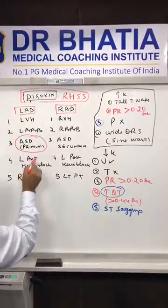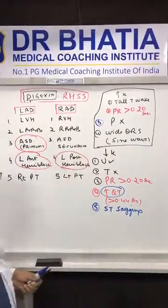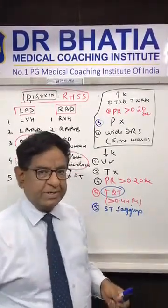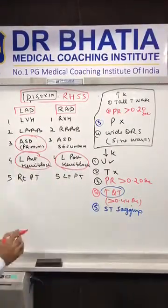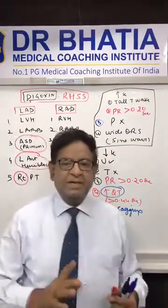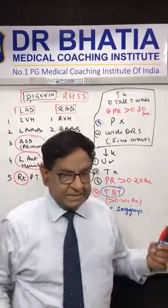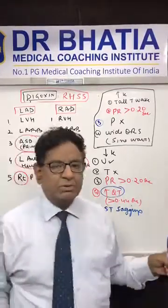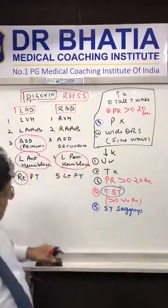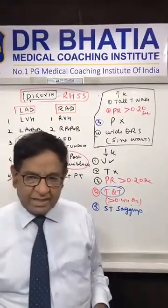Left anterior hemiblock gives left axis deviation, and left posterior hemiblock gives right axis deviation. I'll discuss this further in ECG Part 3. Right pneumothorax leads to left axis deviation simply because the pneumothorax on the right side pushes the heart to the left. Similarly, left pneumothorax pushes the heart to the right — so the opposite pressure results in the opposite axis deviation.